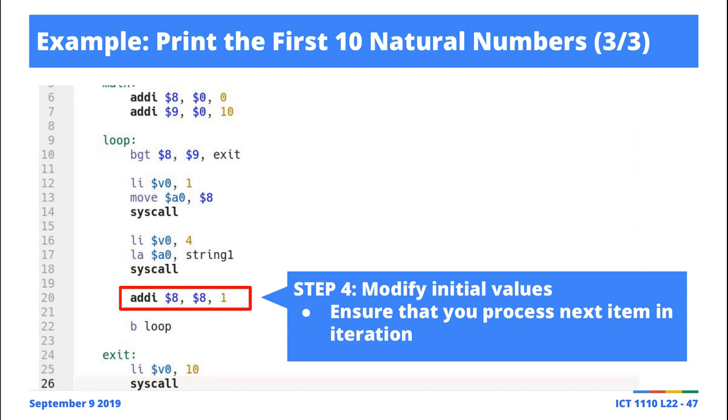If we did not have line number 20 here, the CPU executes this instruction. So register 8 has 0, register 9 has 10. You get into this loop. You come here, you check, BGT, is 0 greater than 10? Of course it's not. So what you do, you print.